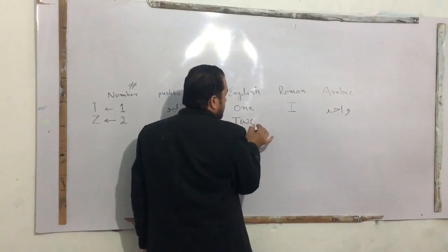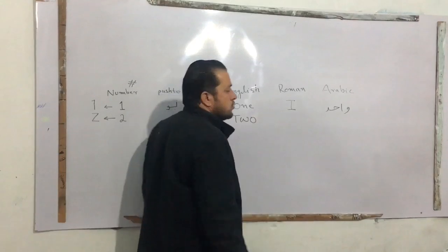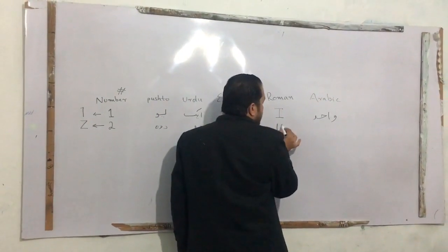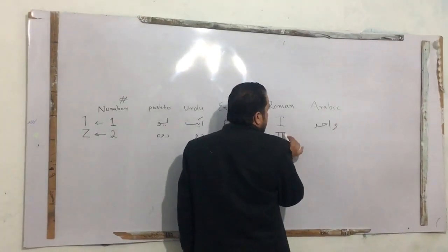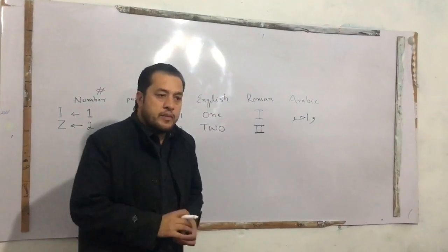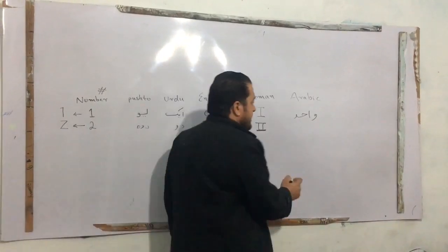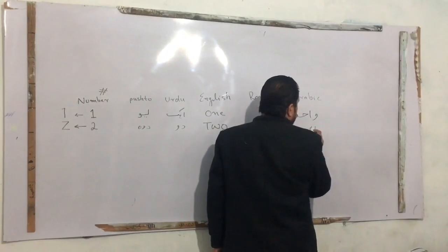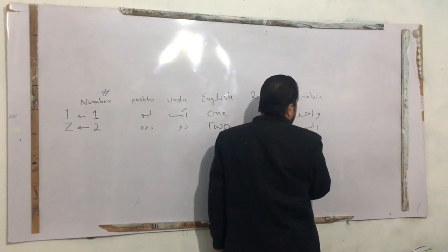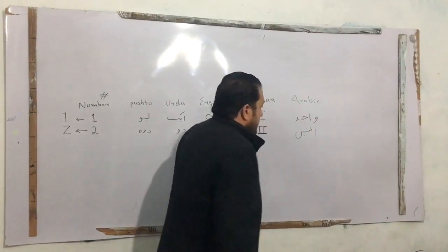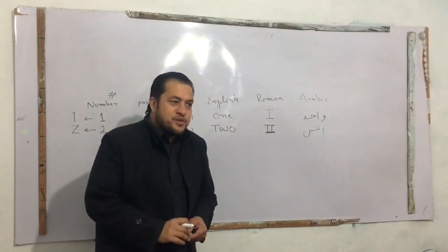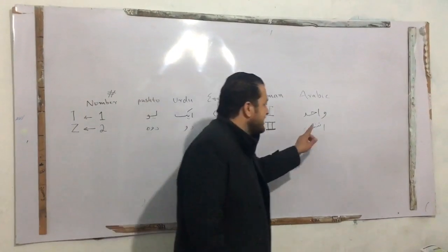In Roman numerals, 2 is written as capital II. In Arabic it is 2. In Urdu, the number 2 is spoken and written as 2.